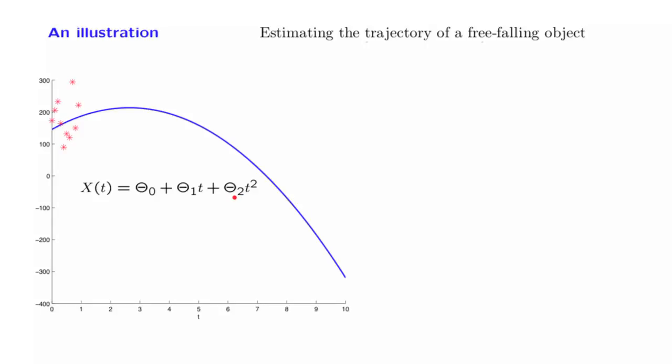We do not observe the true trajectory directly. What we do observe is certain data points. At certain times tᵢ, we make a measurement of the height of the object, except that this measurement is corrupted by some additive noise. This is the model that we introduced earlier.